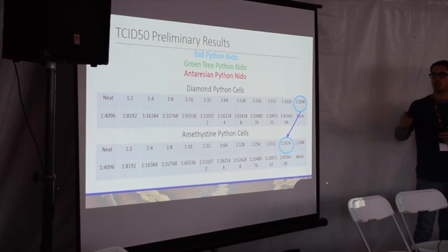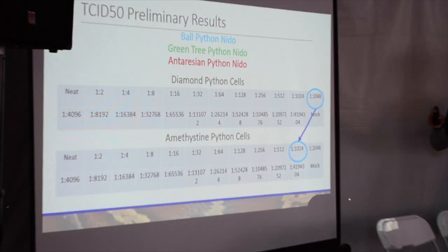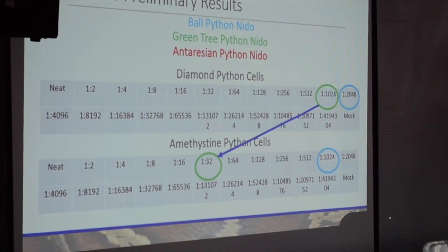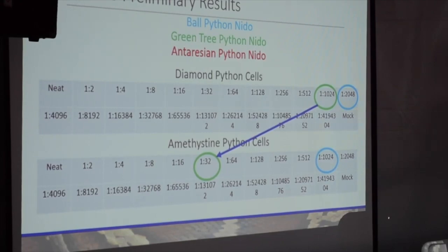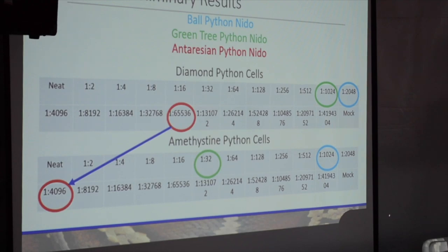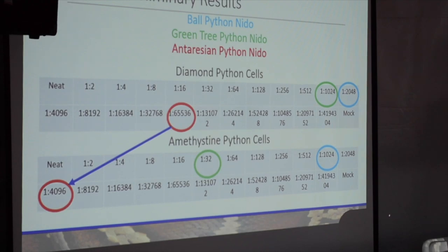Here are some interesting results about differences in how each virus affects a given cell line. Ball python nido on diamond python cells infects a little bit easier than amethystine python. Green tree python nido did not infect the amethystine python cells very well at all — it did much better on diamond python. We see the same thing with reticulated python nidovirus. This gives us some indication that some of these viruses might infect certain animals at a more efficient rate than others.